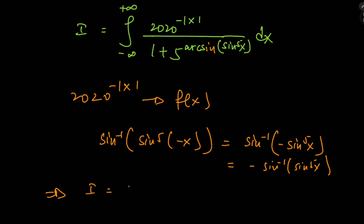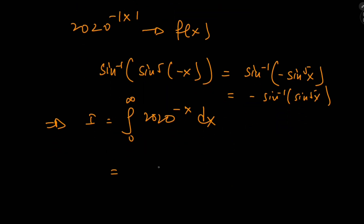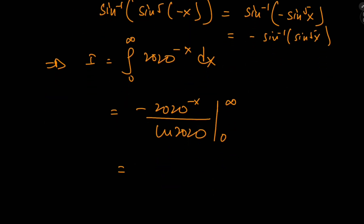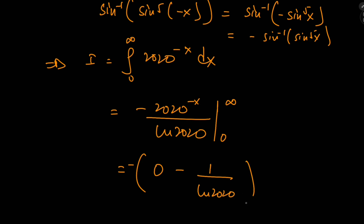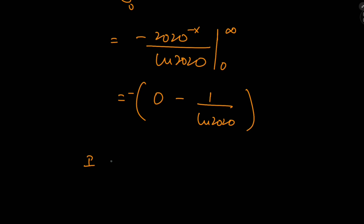So I equals the integral from 0 to infinity of 2020 to the negative x — we've dropped the absolute value since we're on 0 to infinity. This evaluates to 2020 to the negative x divided by negative log(2020), evaluated from 0 to infinity. As x approaches infinity the numerator gives 0, and as x approaches 0 you have 1 divided by log(2020). With the two negatives cancelling, the Berkeley integral equals positive 1 over log(2020).